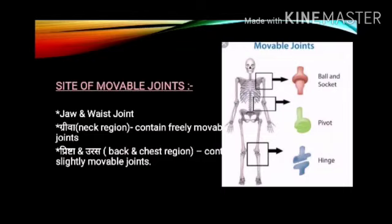Site of movable joints: They are present in the jaw, wrist joint, neck region i.e. Griva, and back and chest region i.e. Prista and Uras.